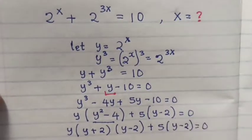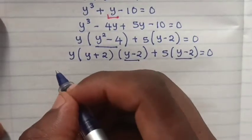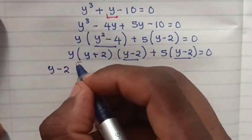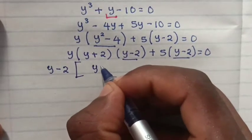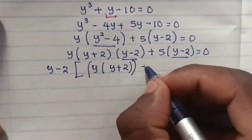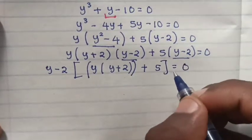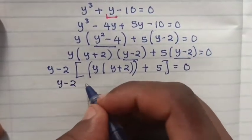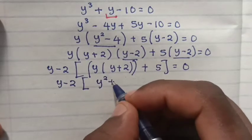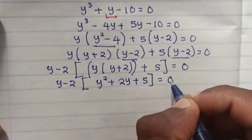So we take y minus 2 out of the bracket. So it will be (y - 2) bracket, and inside the bracket will remain y(y + 2) plus 5 equals 0.